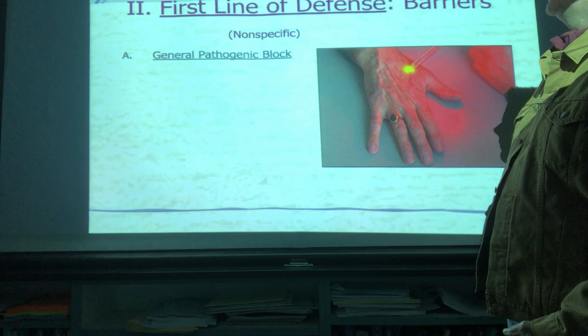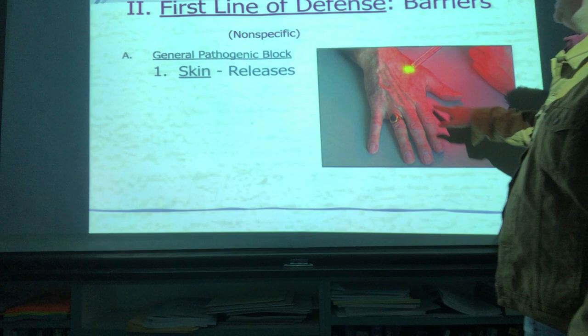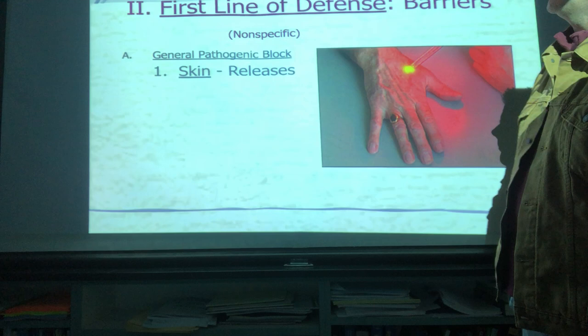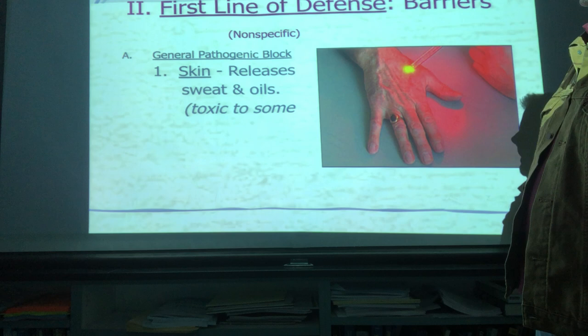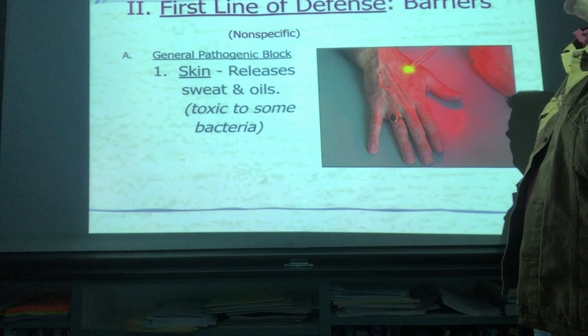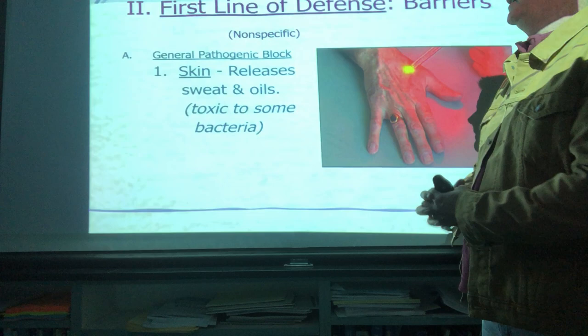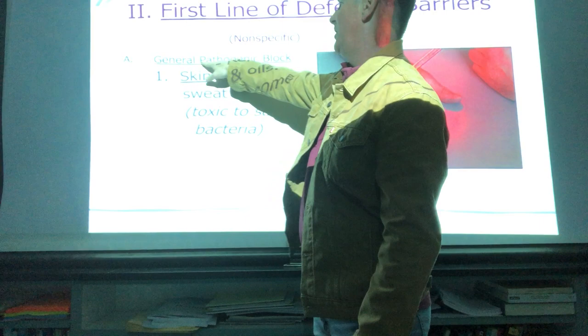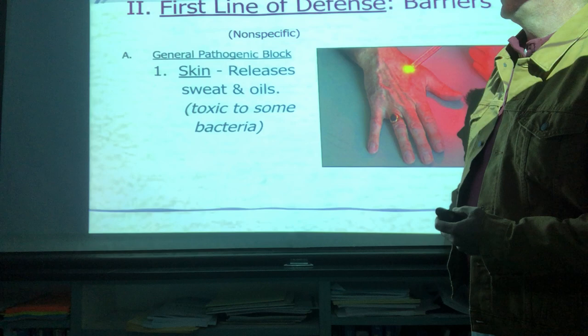The first part of the first line of defense is the human body's largest organ: the skin. The skin is a line of defense because it constantly secretes sweat and oils which are toxic or poisonous to some forms of bacteria. The skin releases these sweat and oils everywhere throughout the body, making it a good general pathogenic block — one of five ways of stopping things from invading your body.